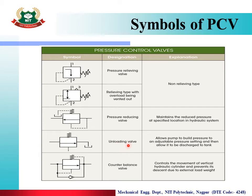Unloading Valve symbol: system pressure comes from inlet port 1; port 2 goes to tank. A drain line from the system shifts the valve line, compressing the spring and allowing flow to tank. It allows the pump to build pressure to an adjustable pressure setting and then discharge to tank. Counterbalance Valve is similar to a pressure relief valve but includes a check valve, and it prevents descent due to external load weight.